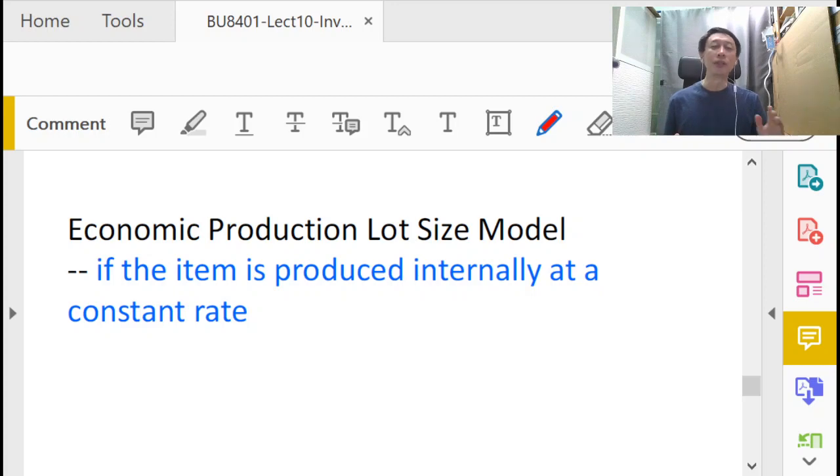In this session, we're going to discuss the economic production lot size model, sometimes called the batch production model or batch delivery model. In our discussion, we're not going to differentiate much between the words production or delivery because they're basically just different words for the same kind of inventory activity. We're going to move back to use the EOQ model again with one exception: we do not have discounts, so it's the base EOQ.